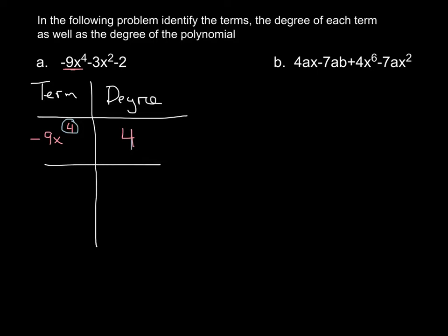Our next term is negative 3x squared. The degree of that one would be 2, because the exponent is squared. Our last term is the constant term, negative 2. Since there's no x term there, the degree of that one is 0.